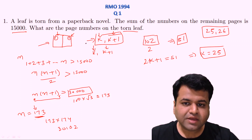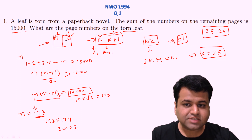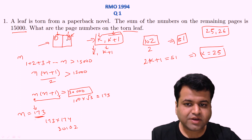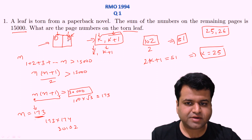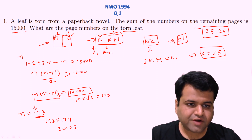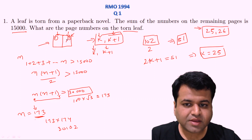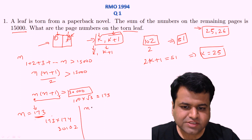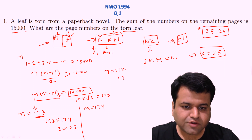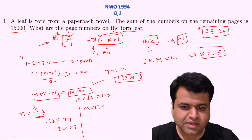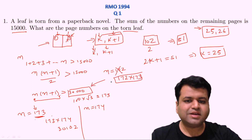This answer of 25 and 26 applies when the numbering starts with page 1 on the first page — that is, the first odd number followed by an even number. Now let's consider more values. If n = 172, then 172 × 173 < 30,000, so n = 172 is clearly rejected.